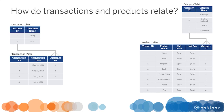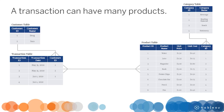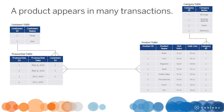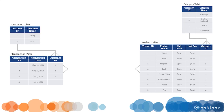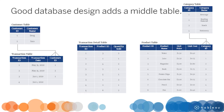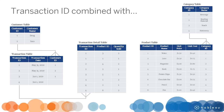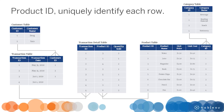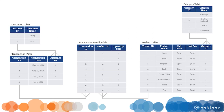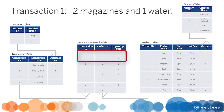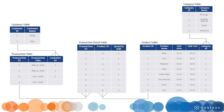How do transactions and products relate? A transaction can have many products, and a product can appear in many transactions — this is a many-to-many relationship. Since there is no common field between the two tables, good database design resolves this by adding a transaction detail table in the middle. Transaction ID combined with product ID uniquely identify each row. The quantity sold is also recorded. The many-to-many relationship has been replaced by two one-to-many relationships.